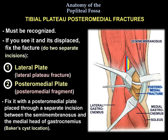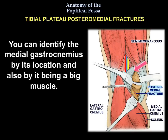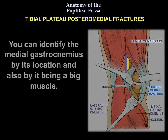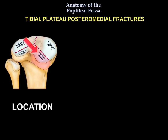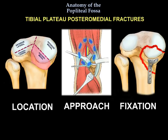As seen in this diagram, the medial gastrocnemius protects the neurovascular structures. You identify the medial gastrocnemius by its location and its size as a large muscle. The neurovascular structures are lateral to the medial gastrocnemius, and this is the approach between the semimembranosus and the medial gastrocnemius for posteromedial plate fixation through that incision.